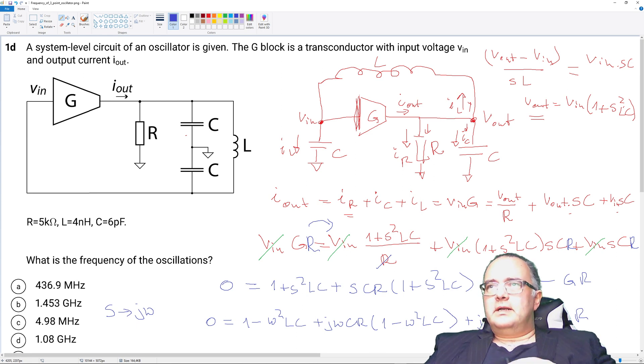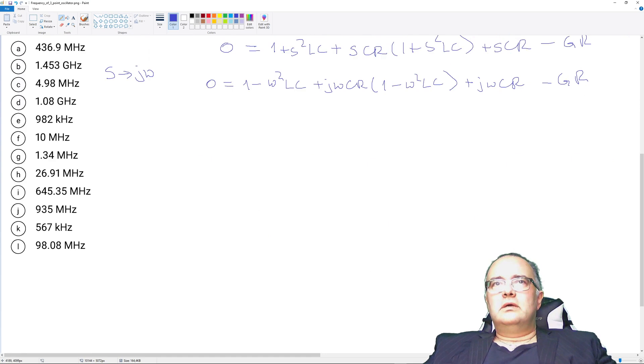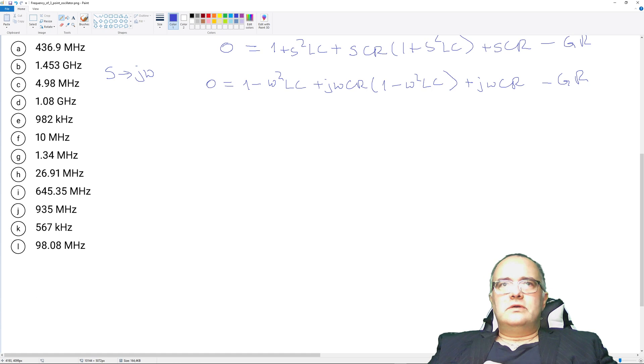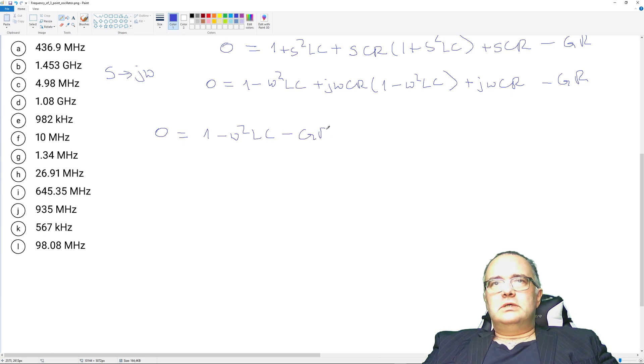Now let's reorder this into real part and imaginary part. So zero and then we have so here only real part 1 minus omega square LC minus omega square LC plus jωCR like this.